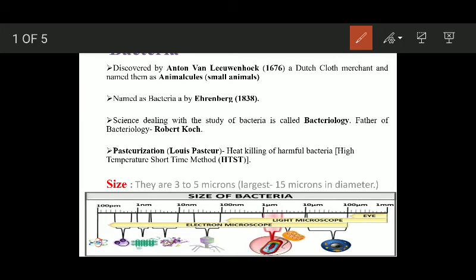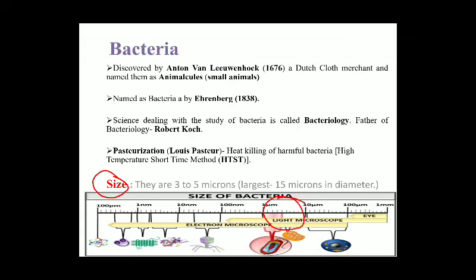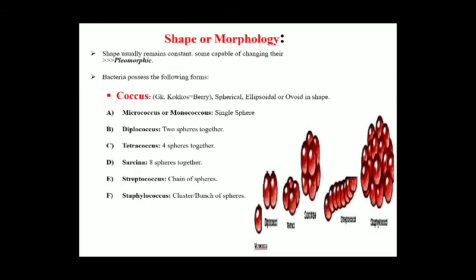Now let's move on to the size of bacteria. Bacteria range in size from 3 microns to 5 microns, which means they are very small. You cannot see them with the naked eye. You have to take the assistance of a light microscope, because a light microscope enables you to see in the micron range.